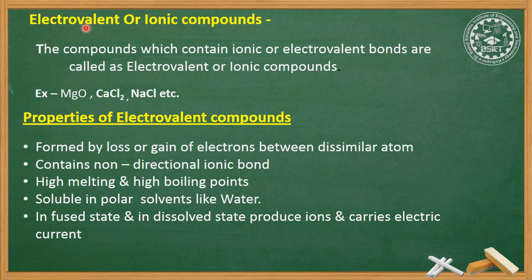Now we will discuss electrovalent or ionic compounds. The compounds which contain ionic or electrovalent bonds are called electrovalent or ionic compounds. For example, magnesium oxide, calcium chloride, and NaCl — each of these molecules contains an ionic bond, so we call them ionic compounds or electrovalent compounds.